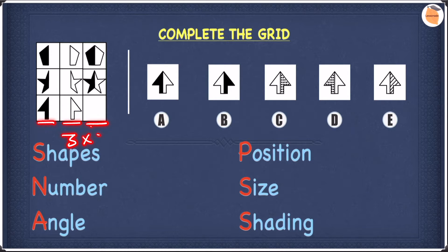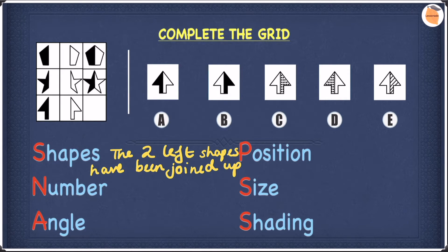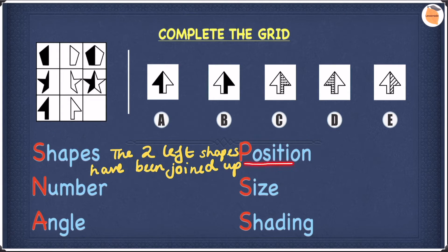Now let's look at this example. The shape is a bit larger — we have a three by three grid. In terms of shapes, if you look at the two left-hand shapes in the first row, you add these two to make the shape on the right. The same applies to the second row. So we'll have to add the two left shapes to give us our answer. In terms of number, the number of shapes on one grid stays the same. In terms of angle, none of the shapes are rotated.